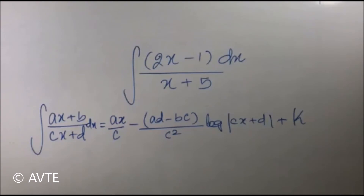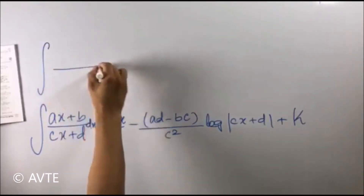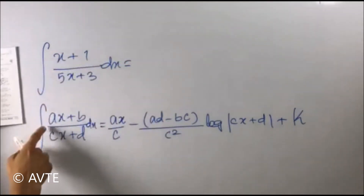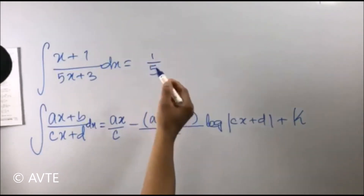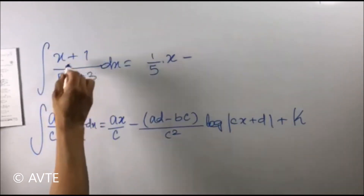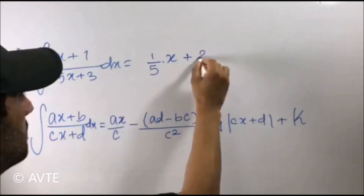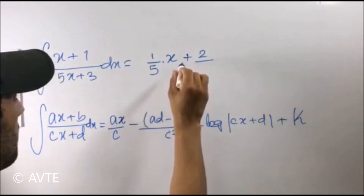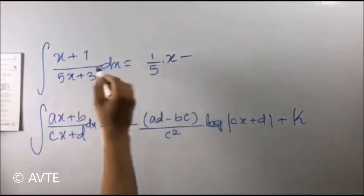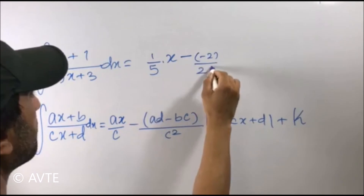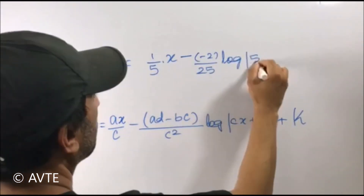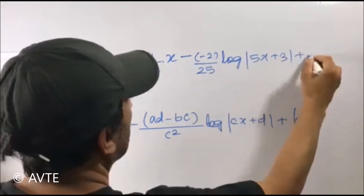Taking another question, the answer will be a over c, which is 1 over 5, into x minus (3 minus 5). Since minus and minus gives plus, we get minus 3 minus 5 which is minus 2, giving plus 2 over 25 log mod (5x + 3) plus c.